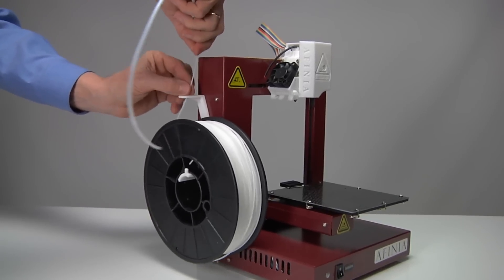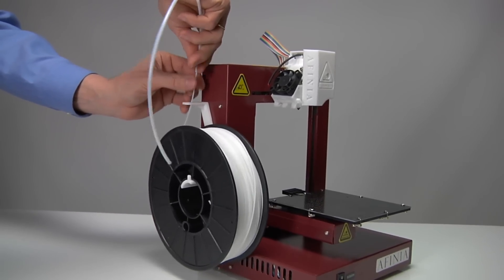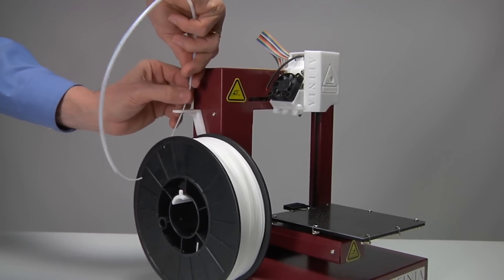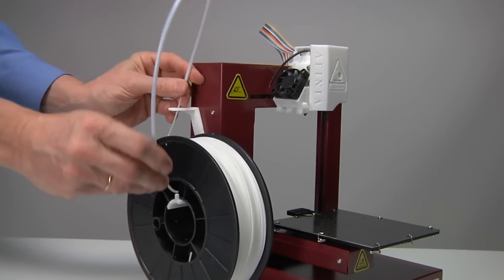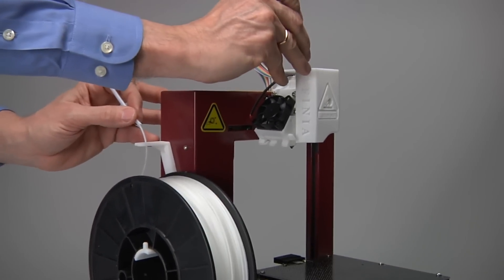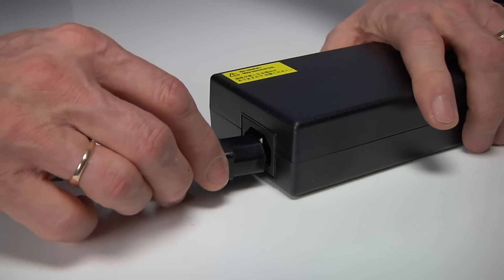Insert the end of the filament into one end of the filament tube. Feed the filament through the tube until about four inches protrudes from the tube. Insert the first inch or so of the protruding filament into the top hole of the extruder head.